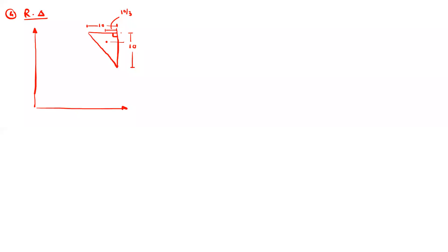And along the y direction, we can find out this distance. So this is also 10 by 3. But to find out the x coordinate xi and the yi, we need to measure the distance with respect to the x and y axis.